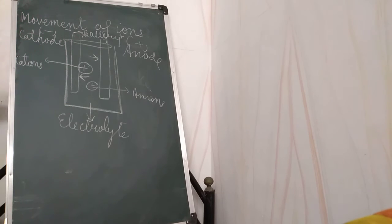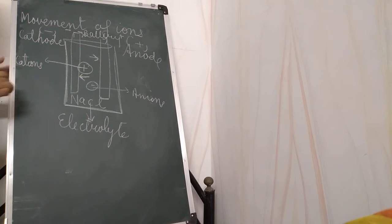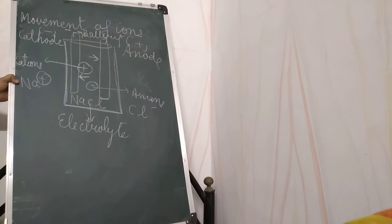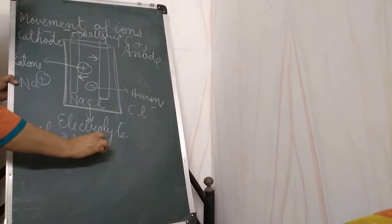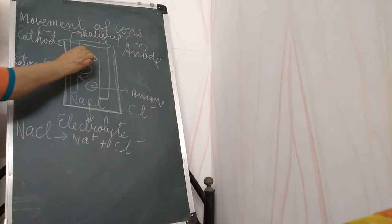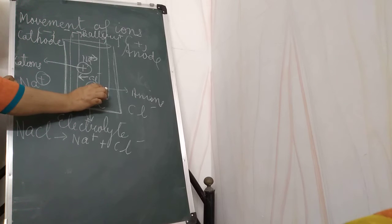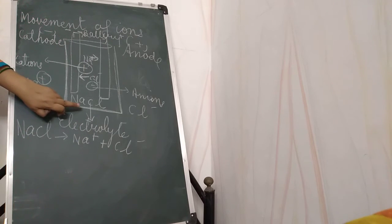Now for the electrolysis of sodium chloride: NaCl dissociates into Na+ and Cl−. Na+ is the sodium ion and Cl− is the chloride ion. The sodium ion will be attracted towards the cathode and the chloride ion will be attracted towards the anode. This is the movement of ions in the electrolytic cell.